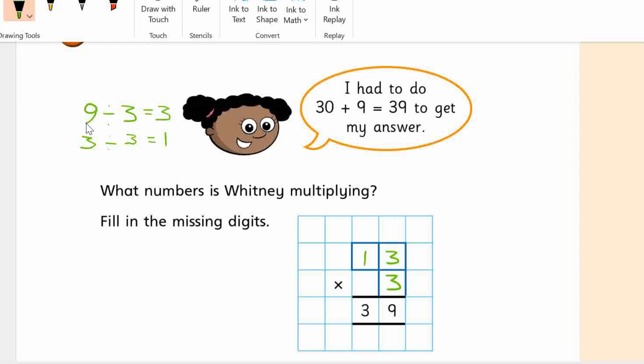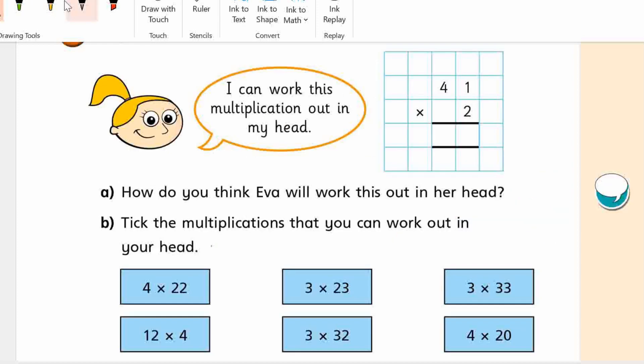She says I had to do 30 plus 9 equals 39 to get my answer. I don't quite know what she means there. I suppose... Yeah, maybe she did 10 times 3 and then 3 times 3. I think she means she did this. She did 10 times 3, which equals 30. And then she did 3 times 3, which equals 9. And then she added them to get 39. So here.